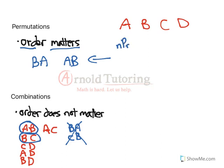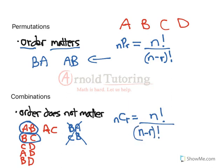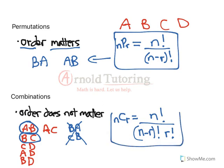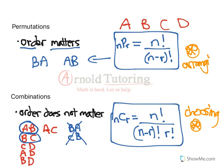Let's go to the formula. NPR — from N items, we're choosing R items — always equals N factorial over (N minus R) factorial. For combinations, it's NCR, so you're just choosing. That's how I remember which one is which: combinations you're just choosing the people, not arranging them afterwards. NCR is N factorial over (N minus R) factorial times R factorial — that part is the same as NPR, except we also have R factorial on the bottom. If you're arranging the items after you choose them, use NPR. If you are simply just choosing, use combinations.